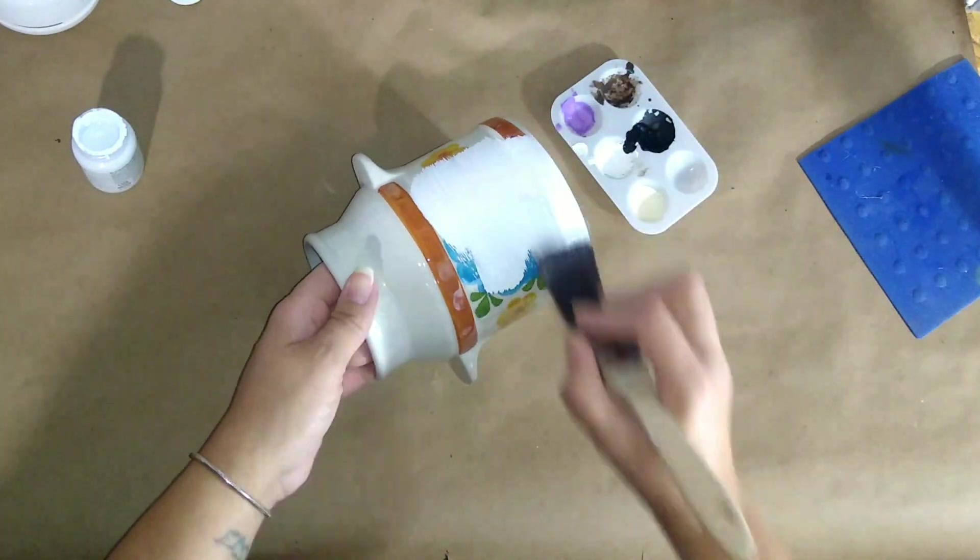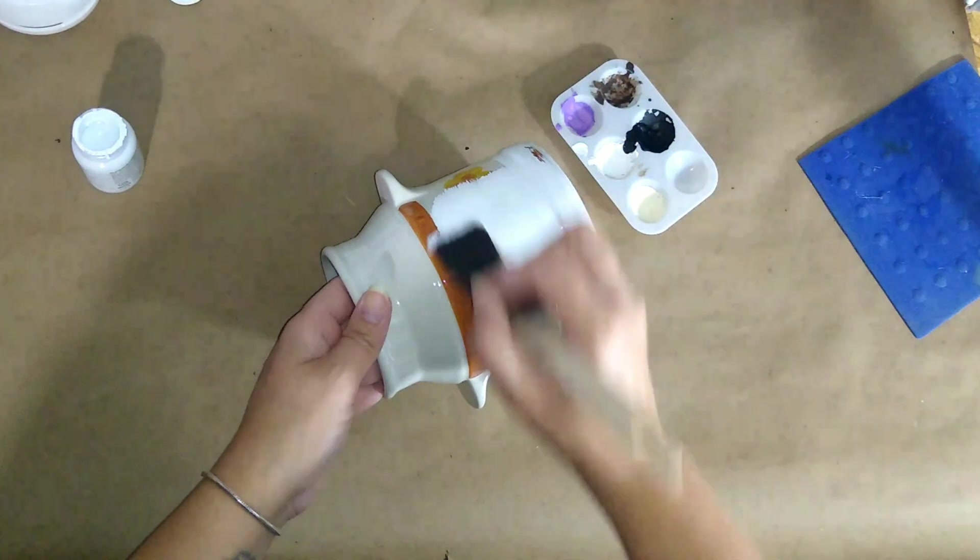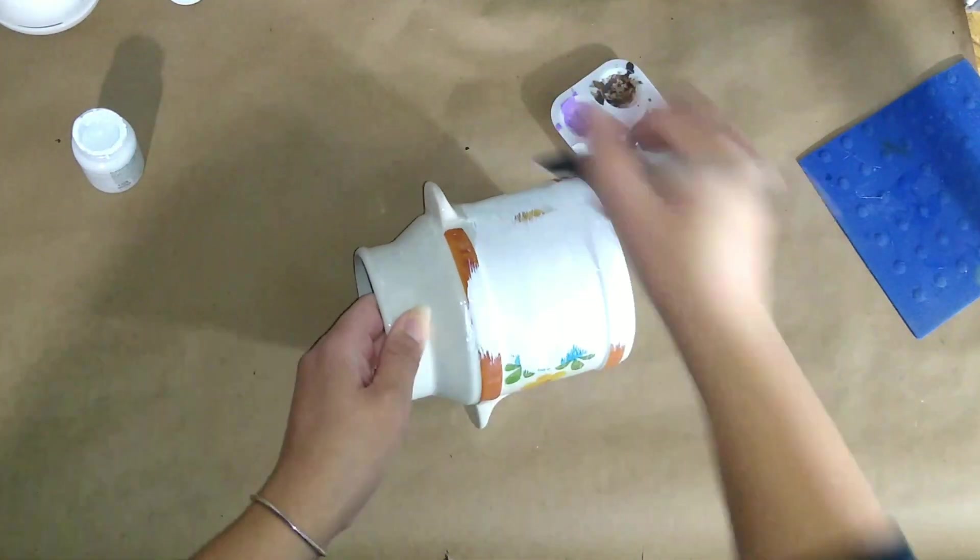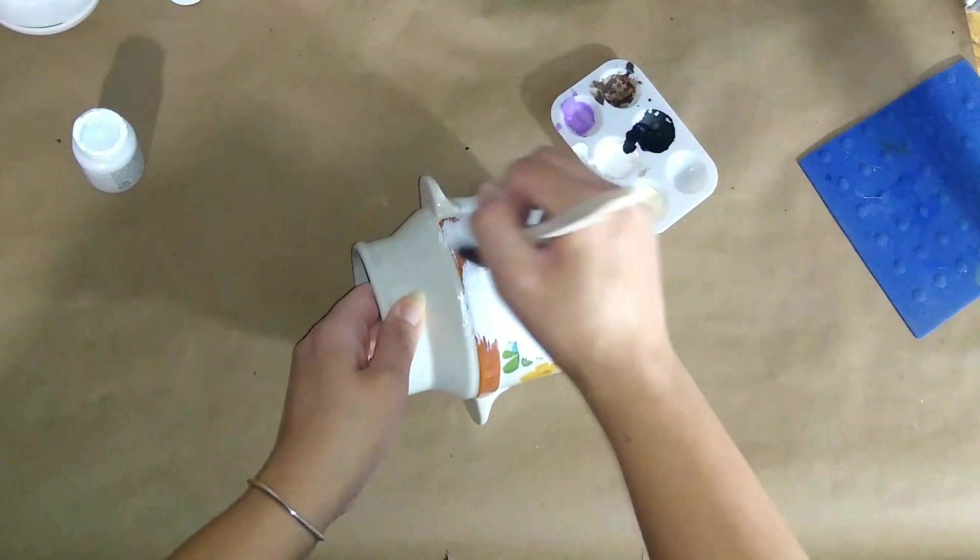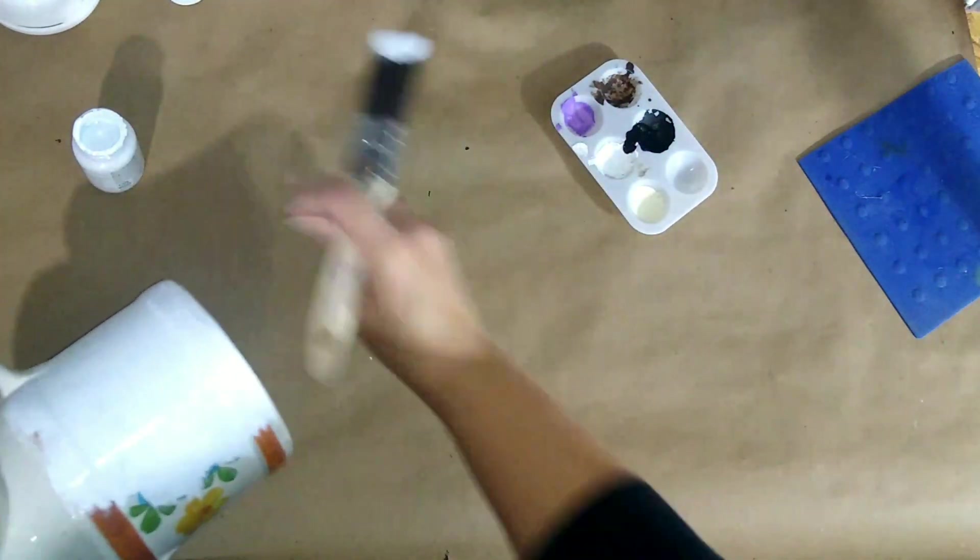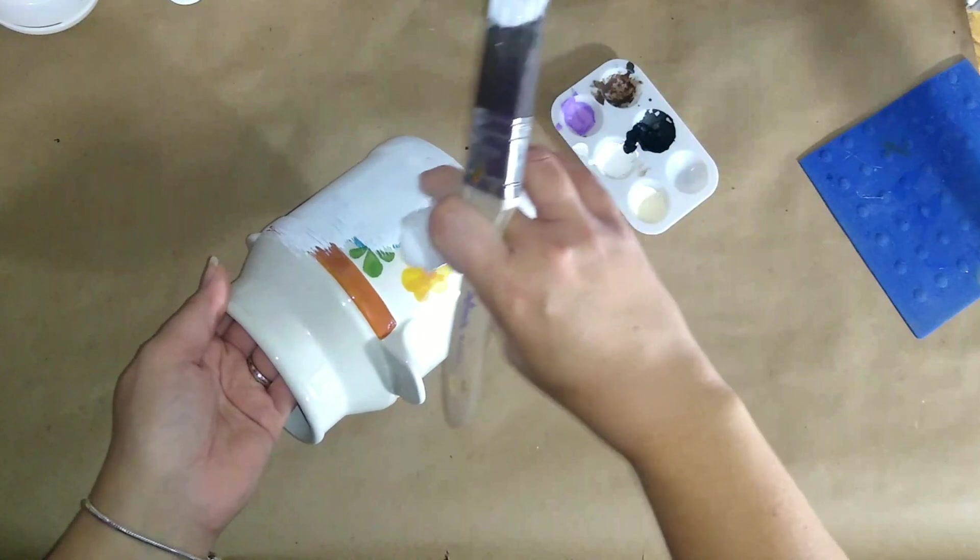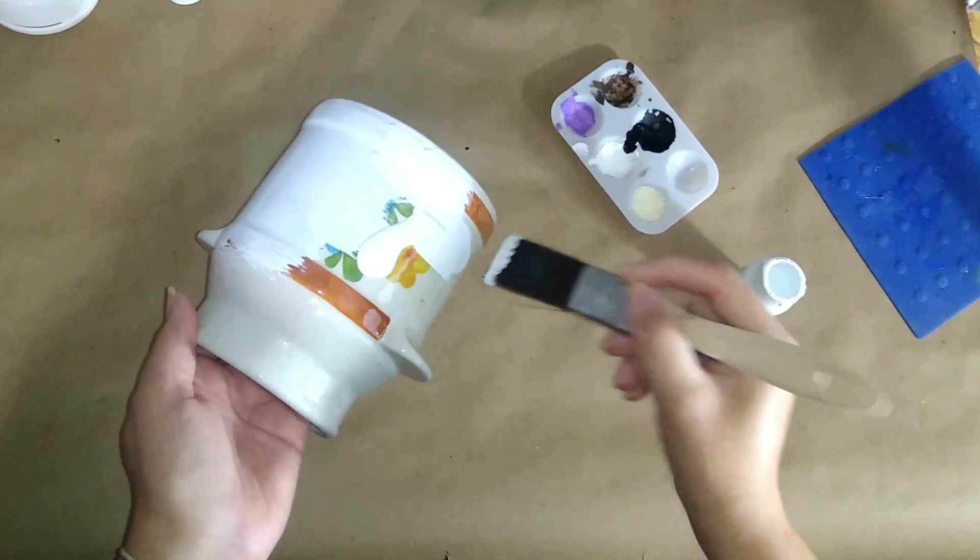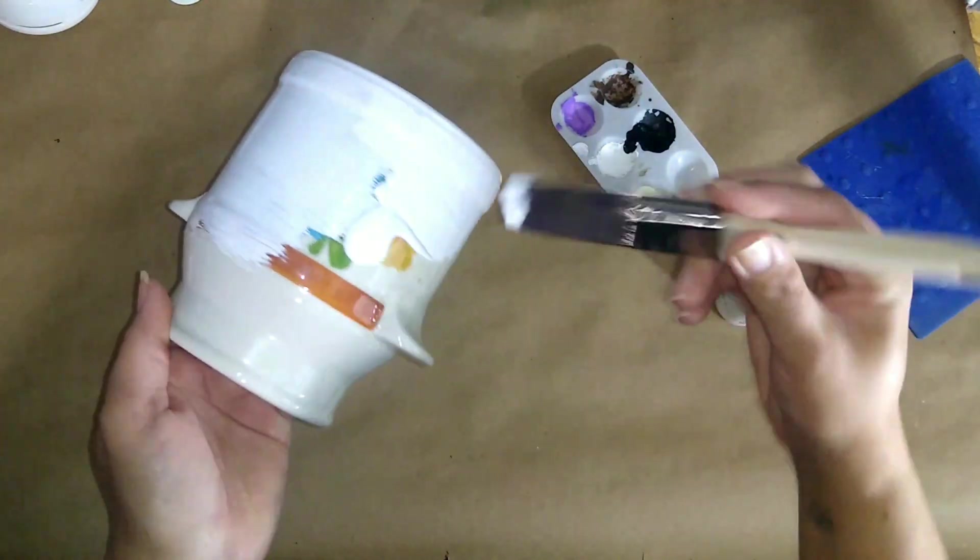If I don't have gesso I would generally spray paint, but it is too cold to spray paint here, so straight chalk paint it is. So I just went ahead and I gave this two coats of the chalk paint and that covered it pretty well.